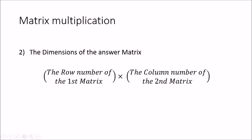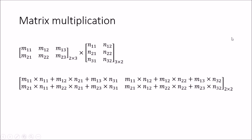If the condition is satisfied, you can multiply the matrices, and the resultant matrix will have the row number of the first matrix and the column number of the second matrix as its dimensions. For example, we have matrix M with a two-by-three dimension and matrix N with a three-by-two dimension. The column number of M is three and the row number of N is three — they are equal, so we can multiply. The resultant will be a two-by-two matrix.